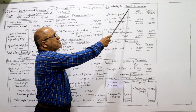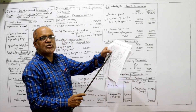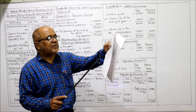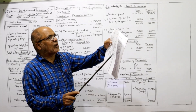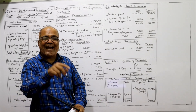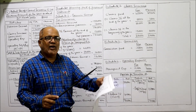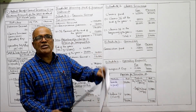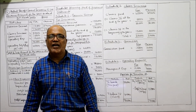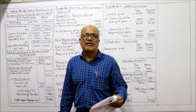Under claims incurred: fire claims paid = 45,000, marine claims paid = 29,000. To these we add outstanding claims at end of year — fire: 5,000, marine: 1,000 — giving totals of 50,000 and 30,000. Then deduct outstanding claims at beginning of year: fire 13,000 and marine 3,000. So claims incurred = fire: 37,000, marine: 27,000.